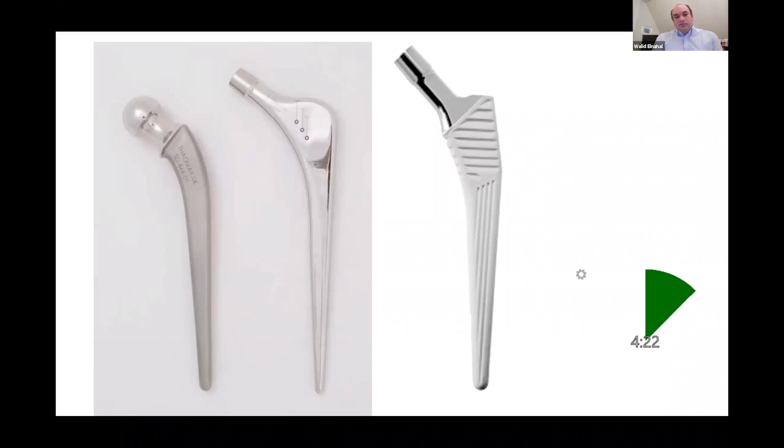It's a fully coated hydroxyapatite, fully coated stem. The two to the left, you've got the Exeter stem and the Charnley stem. Regarding the uncemented stem, the Corail stem, it has a trapezoidal upper metaphyseal component, and the one in the picture is a collarless design.